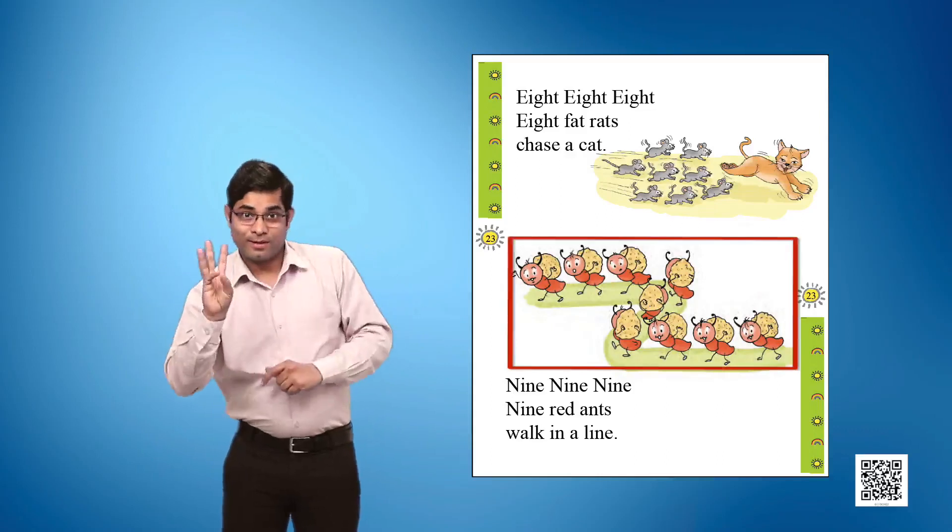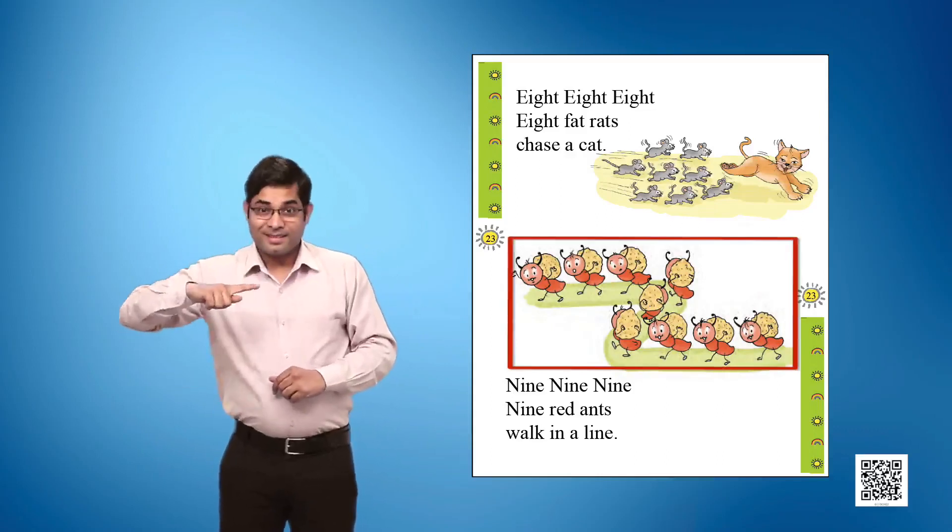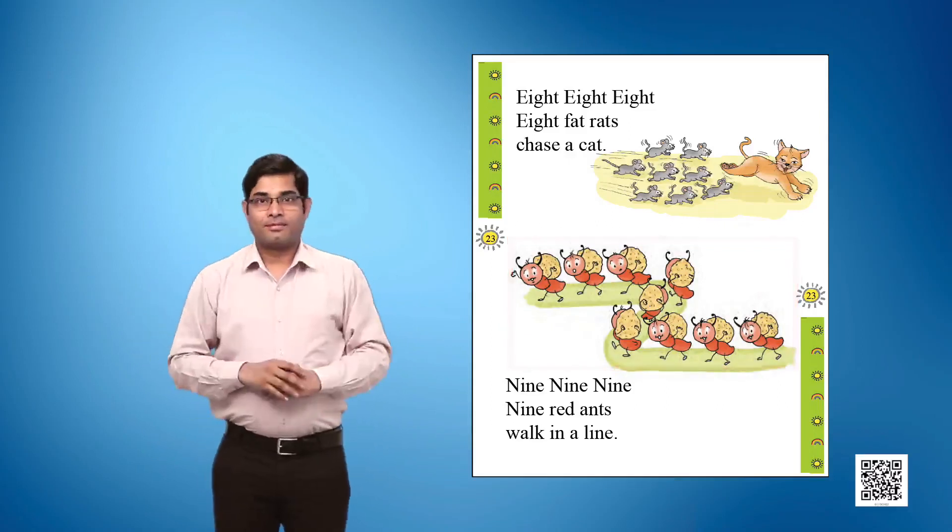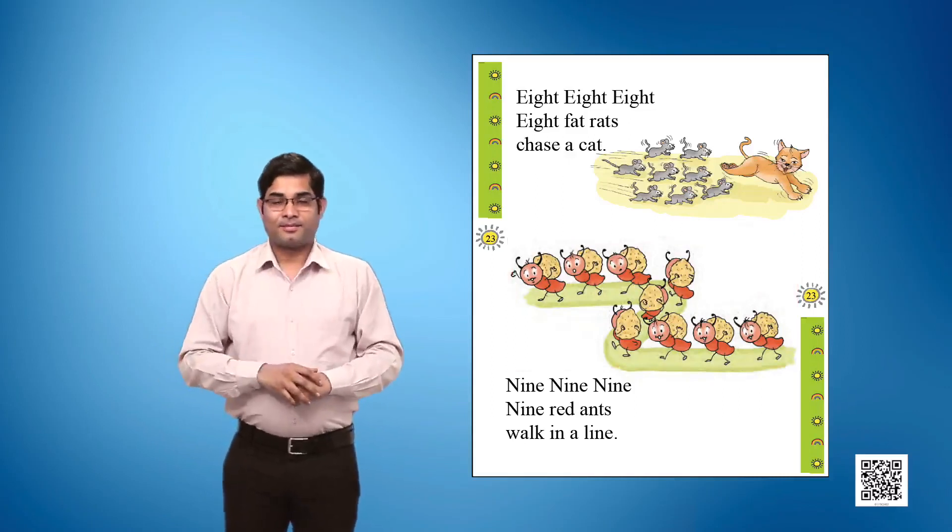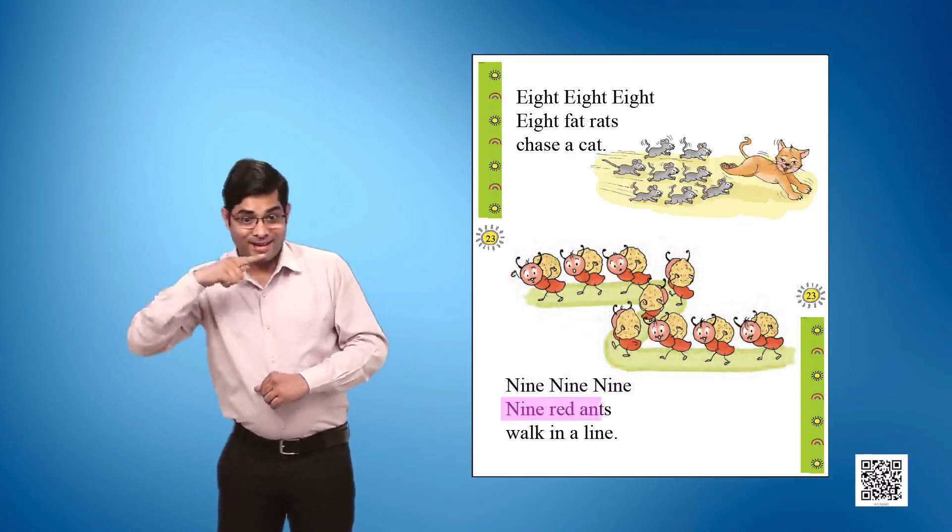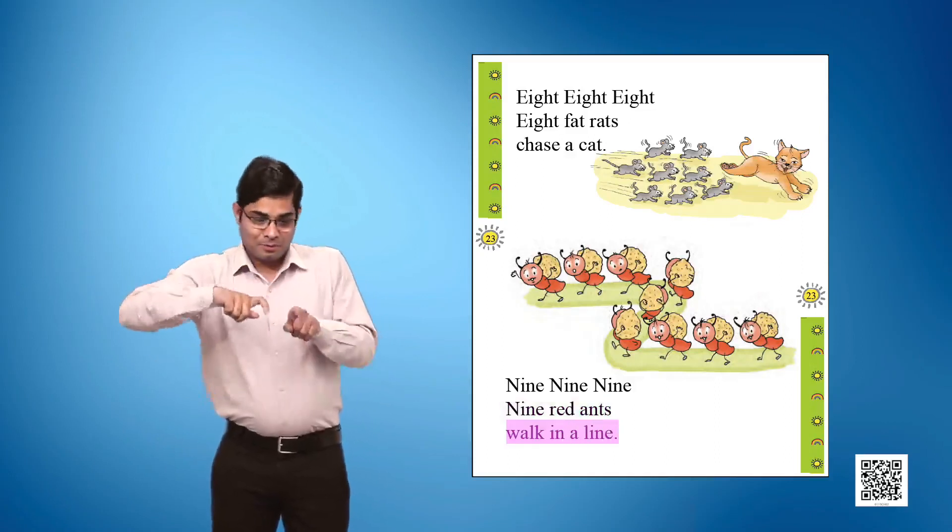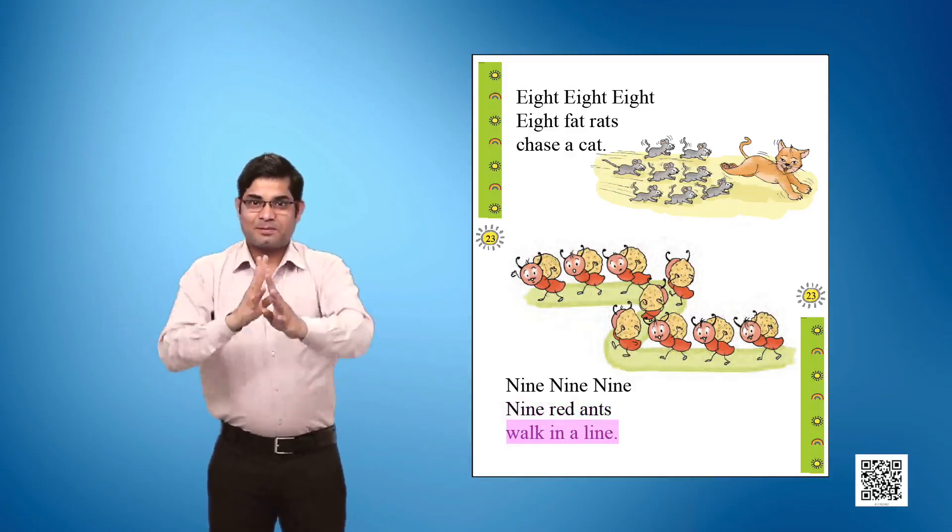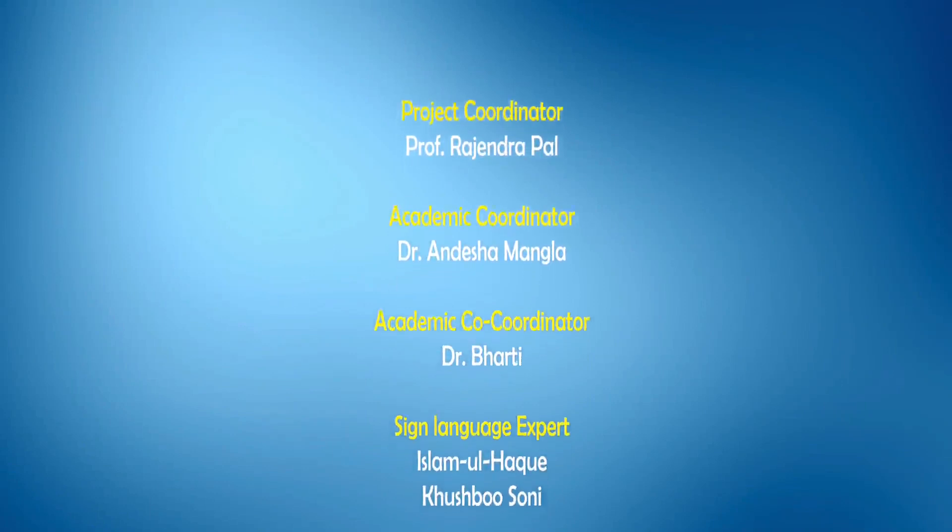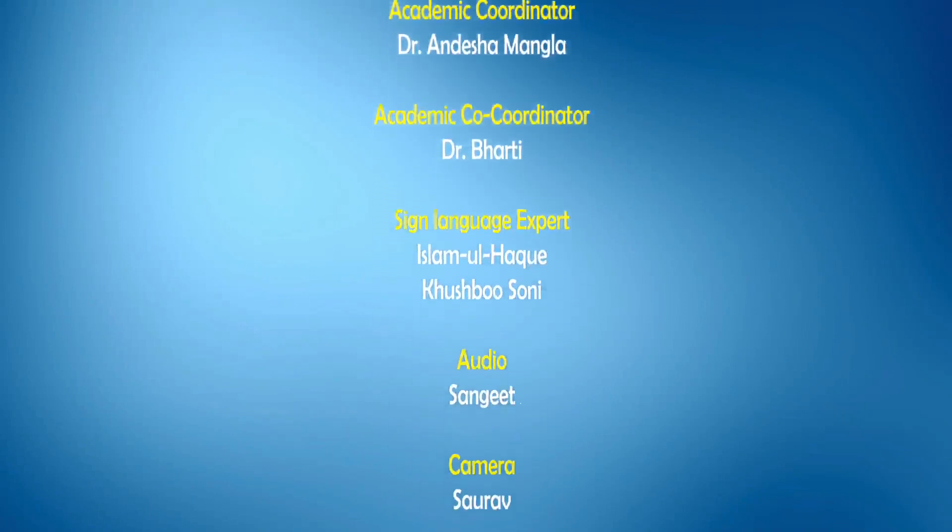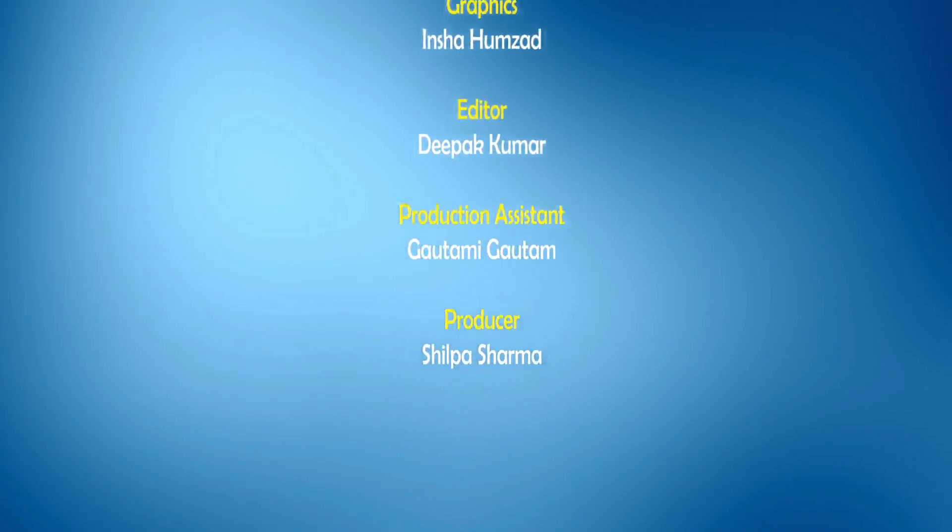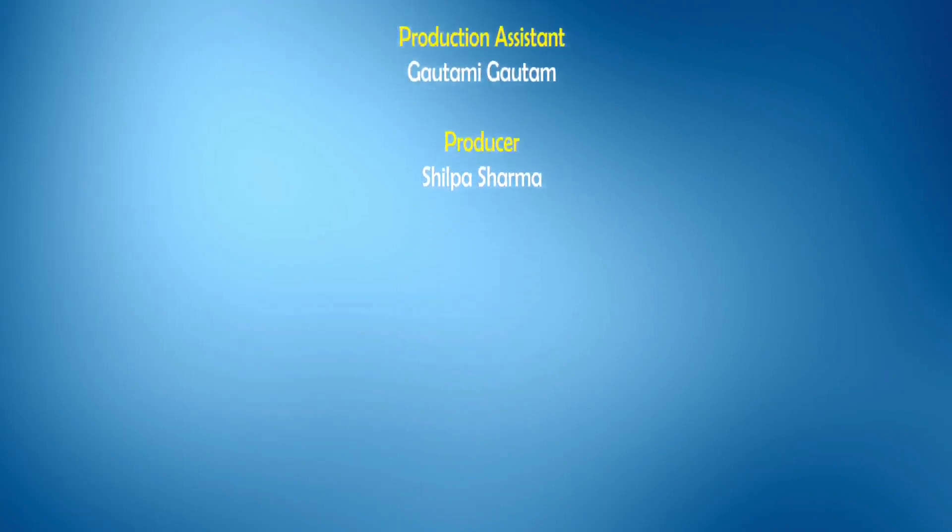Picture 4 shows nine ants walking in a line. Text given: Nine Nine Nine, Nine red ants walk in a line.